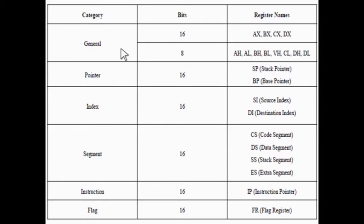The execution unit mainly consists of six main parts: general purpose registers, special purpose registers, arithmetic and logic unit, operand register, instruction pointer and decoder, and flag register. The execution unit performs arithmetic and logical operations and internal data transfer operations.